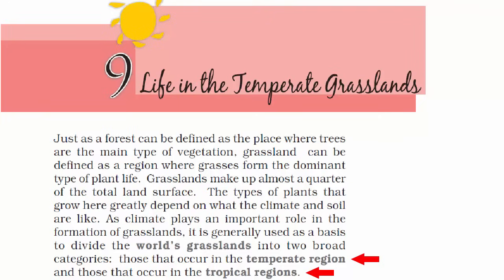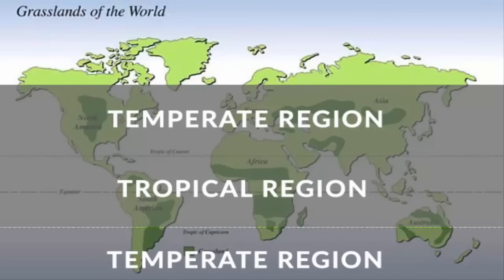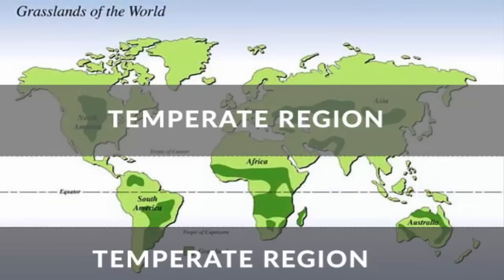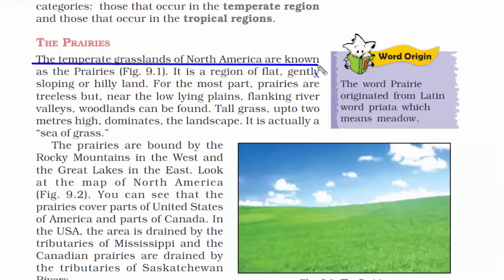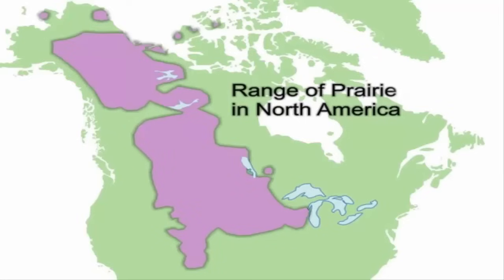Let me show you where these regions are. For this chapter, we are only going to focus on the temperate region. The temperate grasslands of North America are known as the prairies. I'll show this to you on a map — this portion of North America has grasslands, which is called prairies.